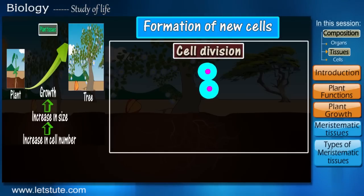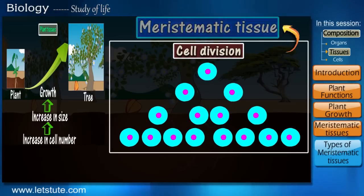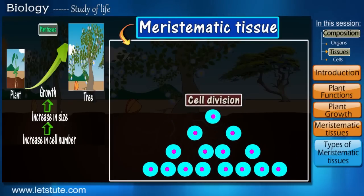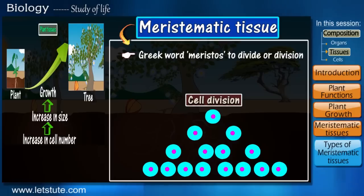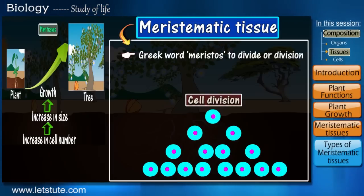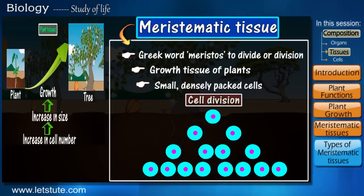All these continuously dividing cells together form the meristematic tissue, where the word meristematic is derived from the Greek word meristos, which means to divide or division. The meristematic tissue is known as the growth tissue of the plant and consists of small, densely packed cells.